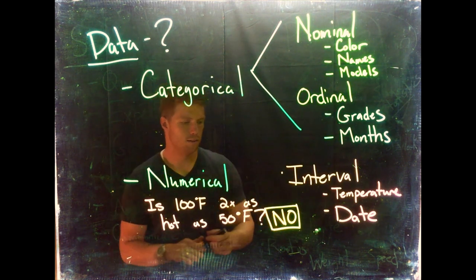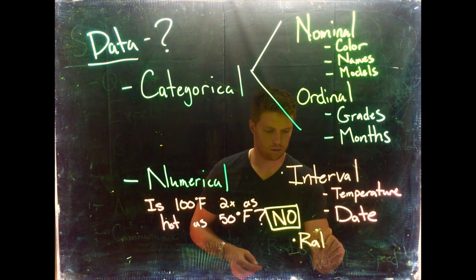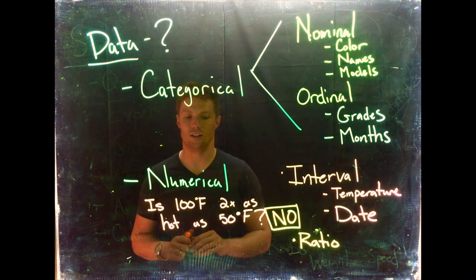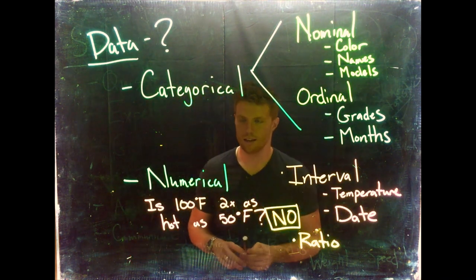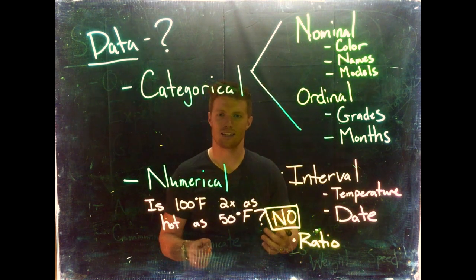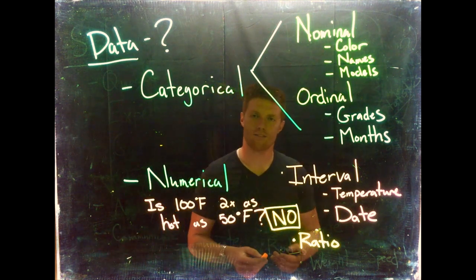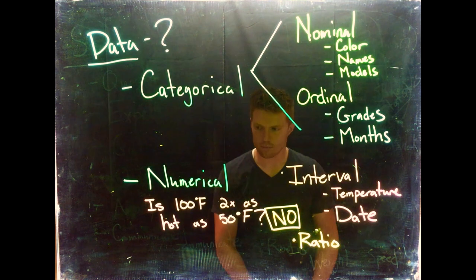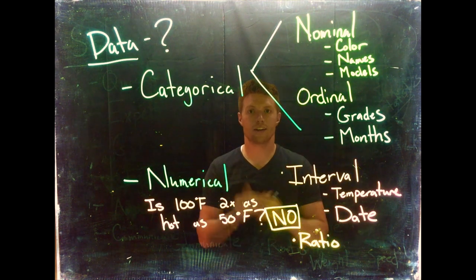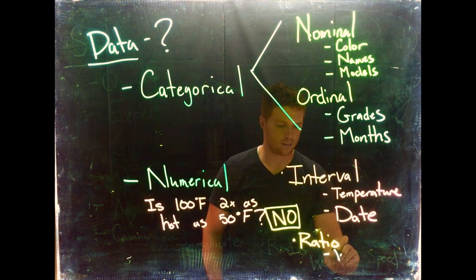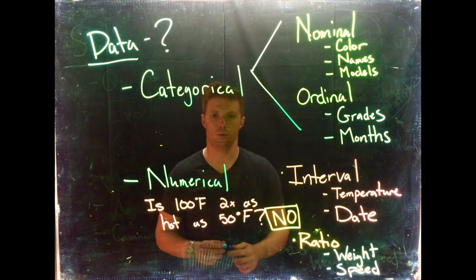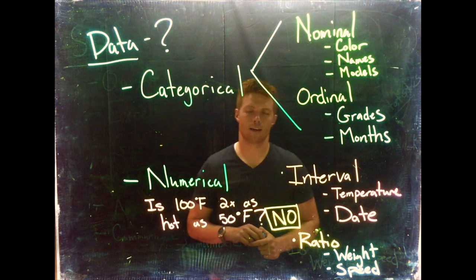Now we could change temperature to be ratio data if we use a Rankine scale or Kelvin scale, where absolute zero is - there is no heat at all. Same thing with date: is the year 1000 half as much time as the year 2000? The answer is not really, because time goes way further back than where we have it arbitrarily set at zero. But ratio data - it's numerical where there are specific set distances between measurements and there is a fixed zero point. We could say things like weight and speed - those are both good examples of ratio data.